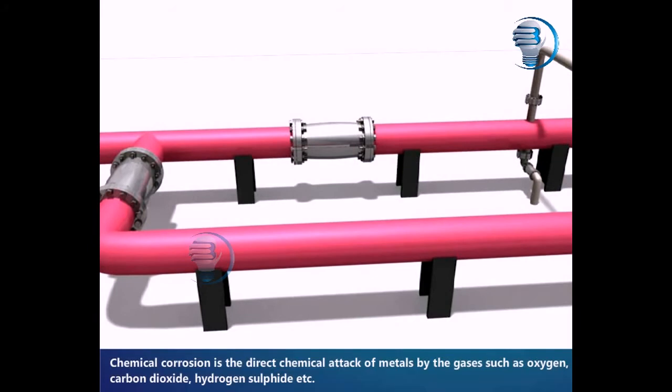Chemical corrosion is a direct chemical attack of metals by gases such as oxygen, carbon dioxide, hydrogen sulphide, etc.